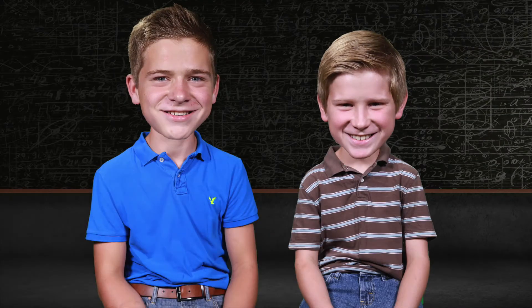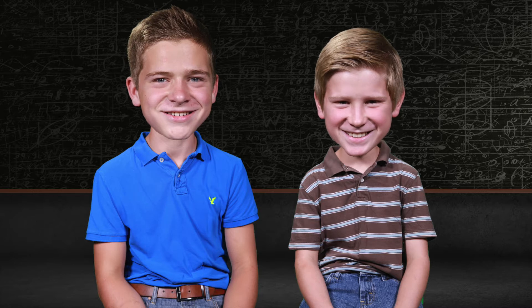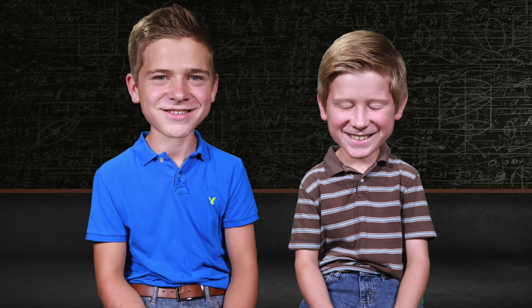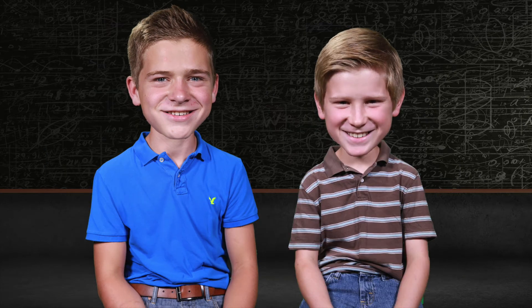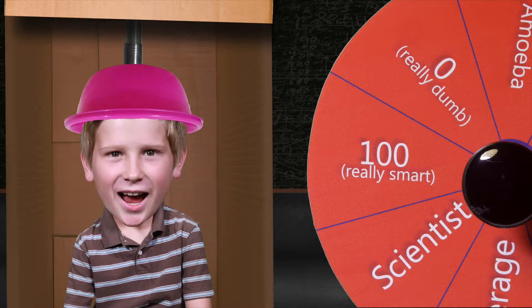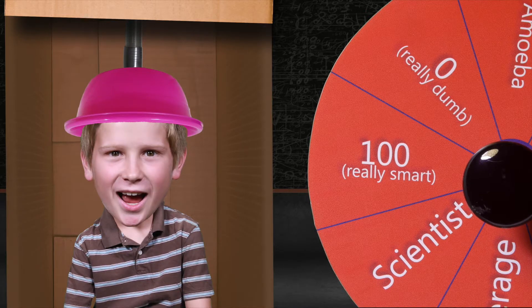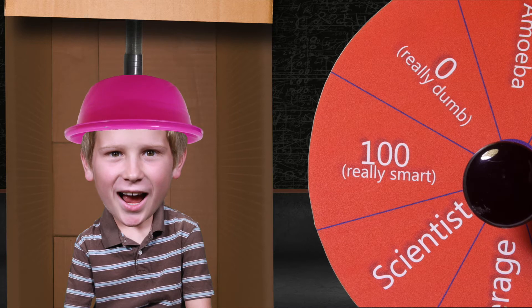To help us think about the necessity of intelligence for creation, let's take a simple illustration using two boys we'll call Charles and Chance. We're going to leave Charles as he is, but we're going to hook Chance up to our special intelligence reduction machine. If we place the cap on Chance, we can turn this dial and see his intelligence decline.